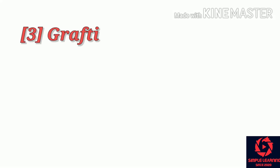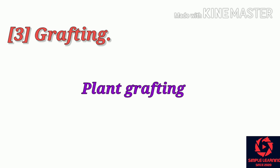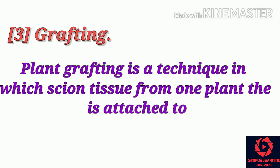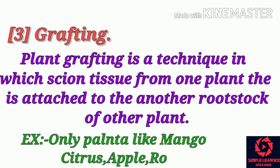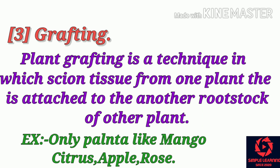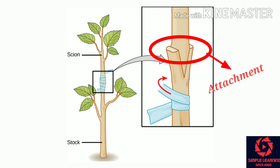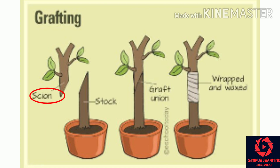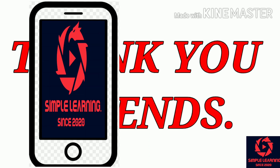Third, it is grafting. Plant grafting is a technique in which tissue from one plant is attached to the rootstock of another plant. Plants like mango, citrus, apple, and rose use this method. If you see the picture, the tissue of one plant is attached to the parent plant and both are joined within a few days, like the tomato plant example we see in class 9th.